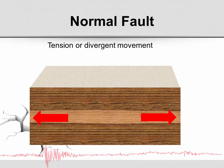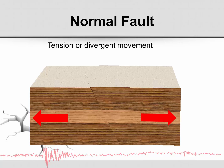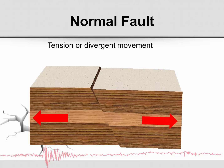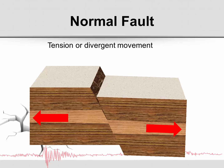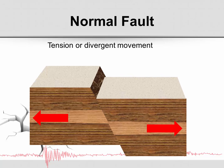A normal fault also happens with tension or divergent motion. If the rock is more rigid and less likely to stretch, it may simply crack, and when it does, one block may drop lower than the other. This is what's called a normal fault.